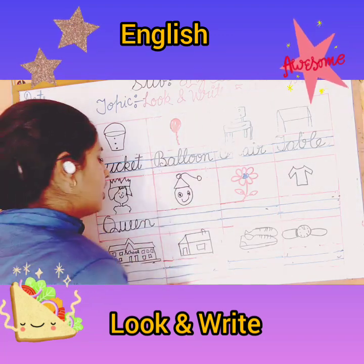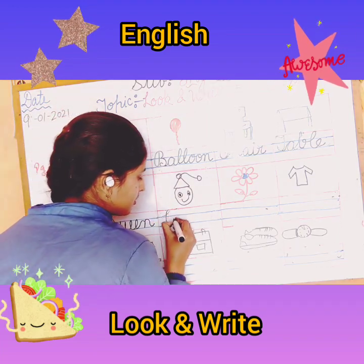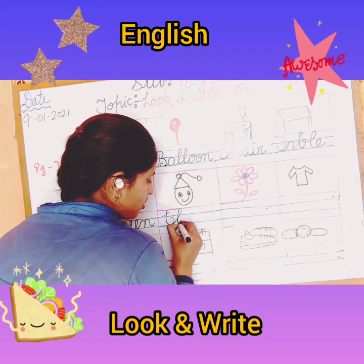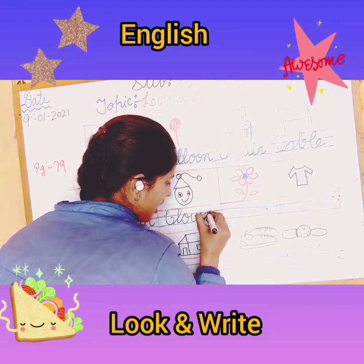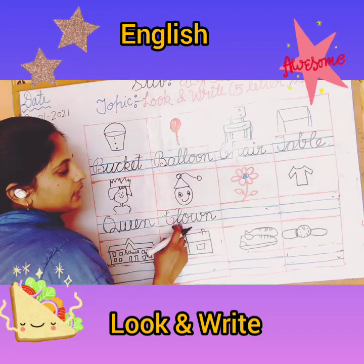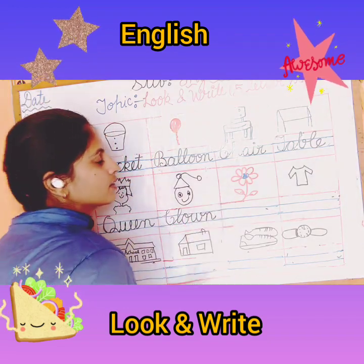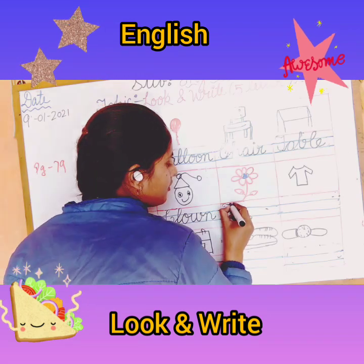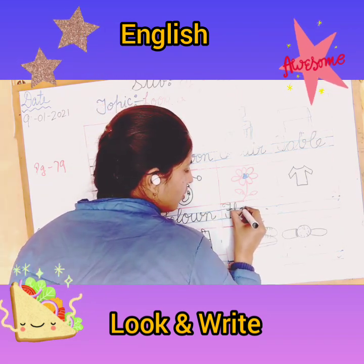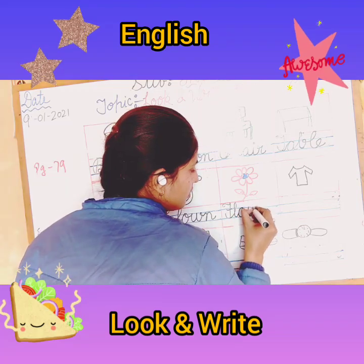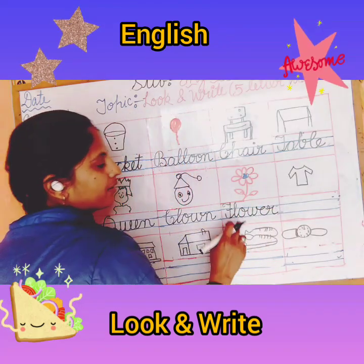See the next — what is this? Clown. Now you have to write the spelling of clown: C-L-O-W-N, Clown. See next — Flower: F-L-O-W-E-R, Flower.